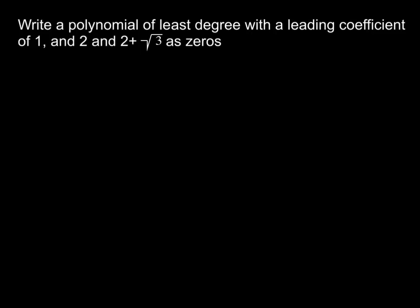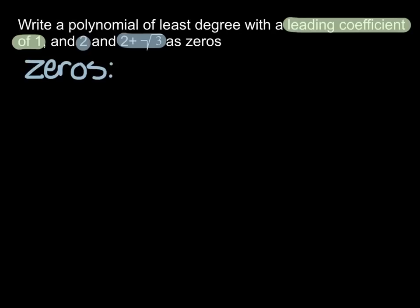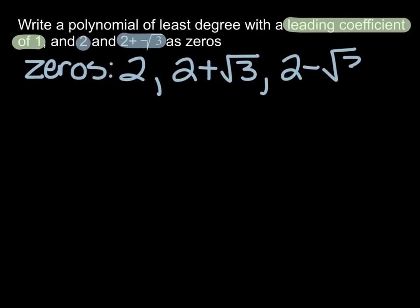So here's an example problem. Write a polynomial of least degree with a leading coefficient of 1 and 2 and 2 plus the square root of 3 as zeros. And I know this one's kind of confusing, but make sure when you're reading it, you say, okay, they're telling me the leading coefficient is 1. So that means my a is 1. I don't have to worry about figuring out a different a. And then my zeros are 2 and 2 plus the square root of 3. But because I automatically know that 2 plus the square root of 3 has to come in a conjugate pair, then I know my zeros are actually going to be 2, 2 plus the square root of 3, and 2 minus the square root of 3. It has to be that way.